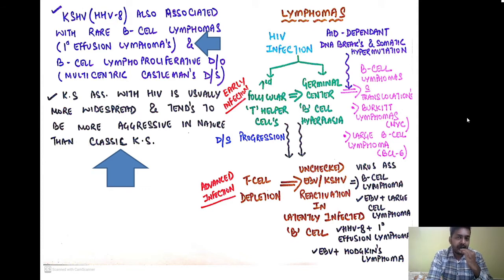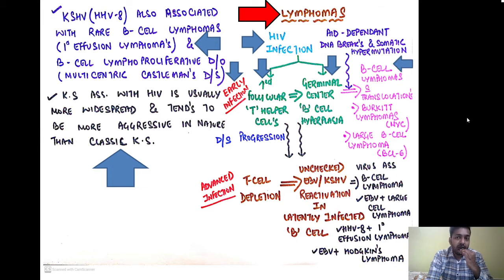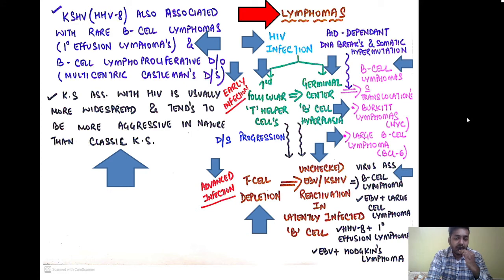The second important cancer in HIV is lymphoma. Early in the course of HIV infection, increased follicular T helper cells cause germinal center B-cell hyperplasia, increasing the risk of B-cell lymphomas with translocation — for example, Burkitt's lymphoma with MYC translocation and large B-cell lymphoma with BCL-6 translocation. In advanced infection with T-cell depletion, there is unchecked EBV or Kaposi sarcoma herpes virus reactivation in latently infected B-cells, leading to EBV-positive large cell lymphoma, HHV-8-positive primary effusion lymphoma, and EBV-positive Hodgkin's lymphoma.